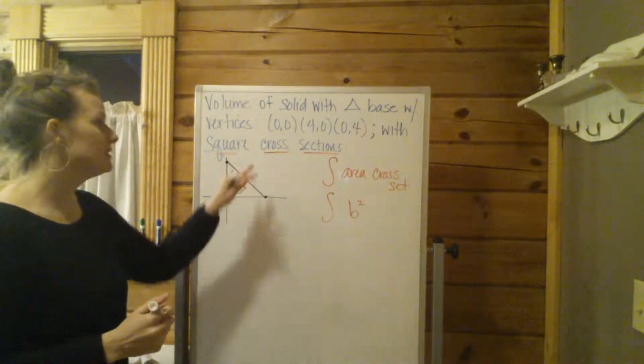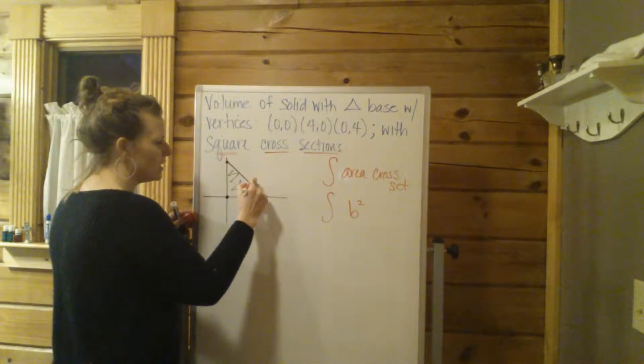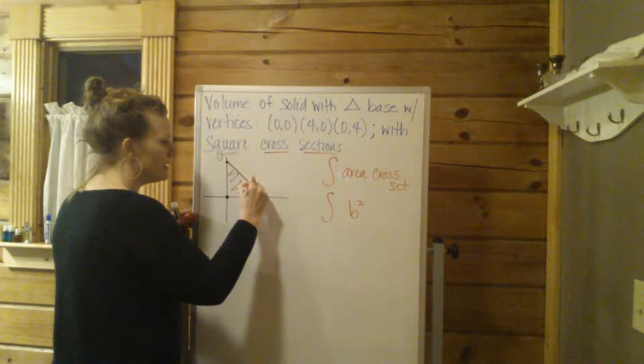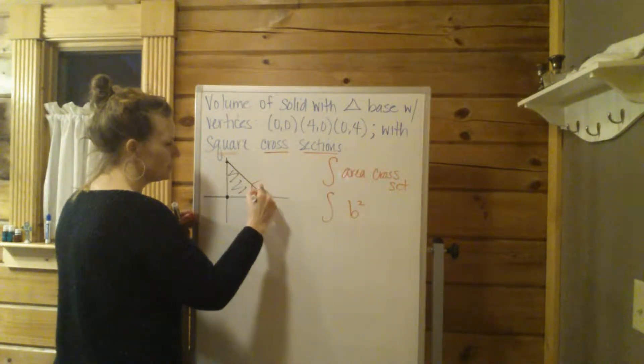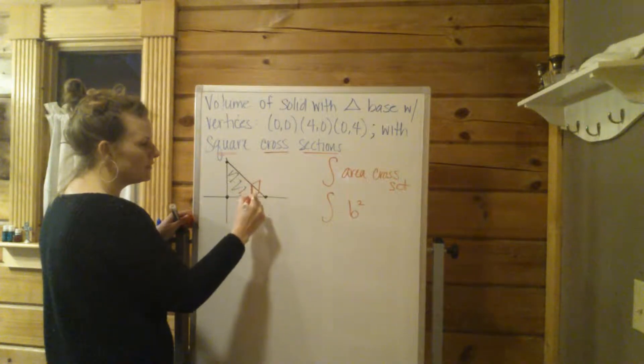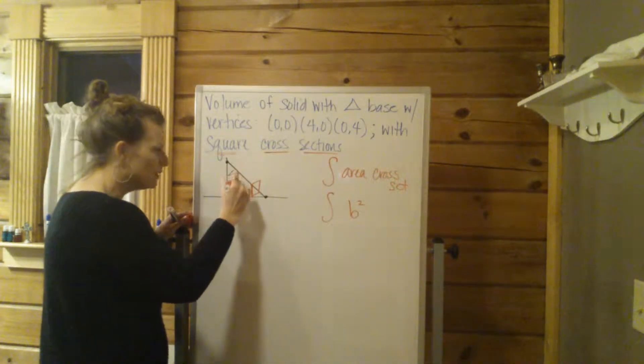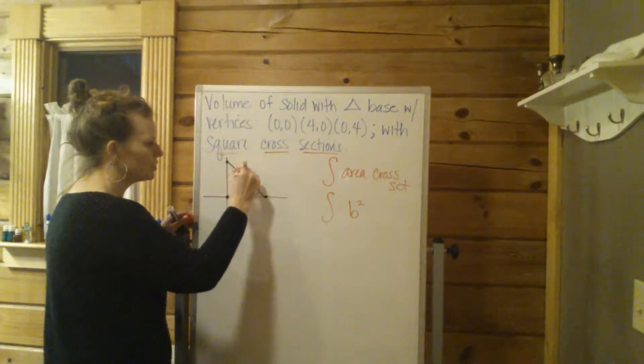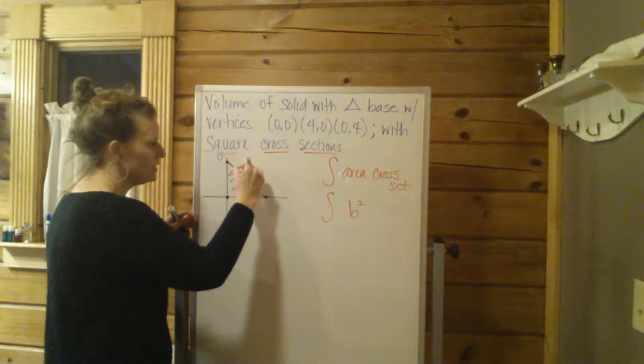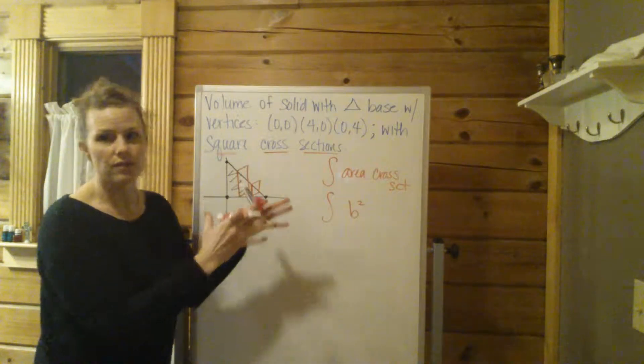Okay, now the cross sections that are squares are actually going to be coming up at us three-dimensionally, if that makes sense. So if you can visualize, the bottom of the square lies across the triangle. The bottom of this square lies across the triangle. And these squares are coming up at us three-dimensionally, off the board.